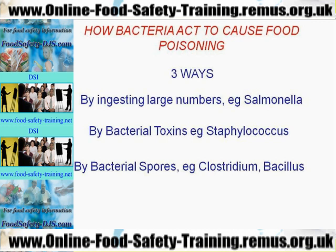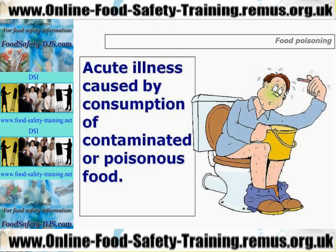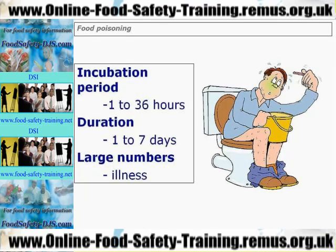Don't forget, bacterial spores per se won't hurt you — they're quite harmless. It's when the spores germinate that's when they start to cause a problem. The definition of food poisoning is an acute illness caused by the consumption of contaminated or poisonous food. Acute means it happens quickly, as opposed to chronic which takes a long period of time. The incubation period — the time taken for you to start showing symptoms after eating the infected food or drink — is anything from 1 to 36 hours. Duration of the illness is anything from 1 to 7 days, and food poisoning requires large numbers of bacteria to make you ill.